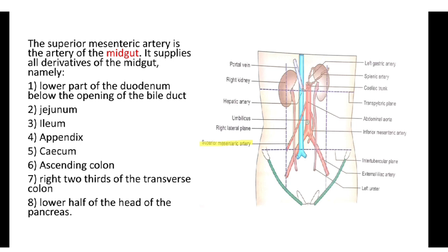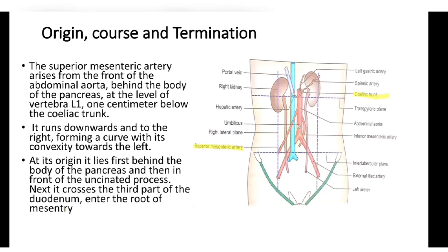In the diagram, the superior mesenteric artery arises from the abdominal aorta and runs towards the right. The superior mesenteric artery arises from the front of the abdominal aorta, behind the body of the pancreas, at the level of vertebra L1, one centimeter below the celiac trunk. It runs downward and to the right, forming a curve with its convexity towards the left.